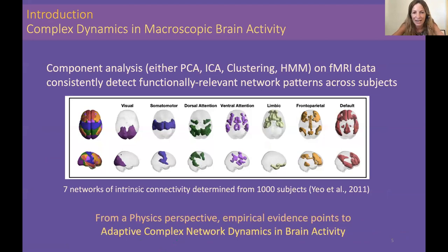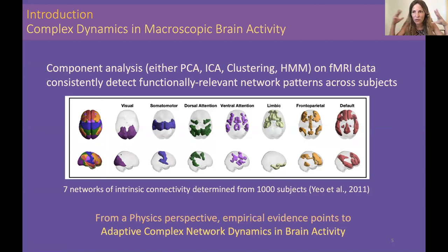Several branches of neuroimaging analysis have applied component analysis — either PCA, ICA, clustering, hidden Markov models — to this fMRI data. They consistently detect the formation of functionally relevant network patterns across large datasets of thousands of people. Consistently, these networks include the visual networks, somatomotor, dorsal attention, ventral attention, and limbic networks, each related to specific cognitive functions.